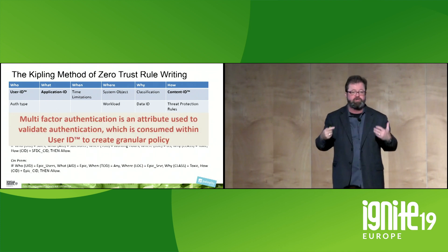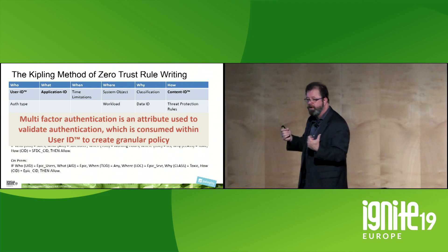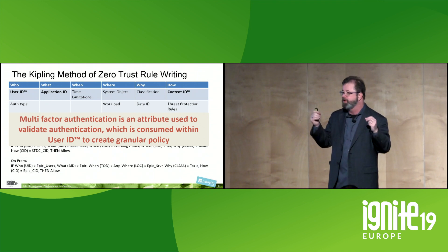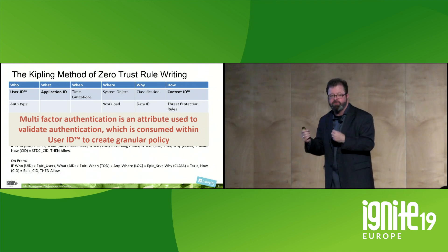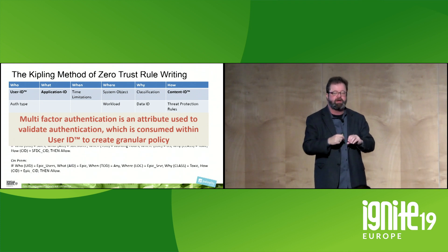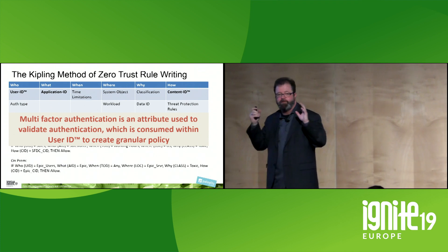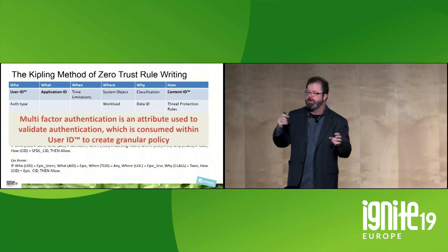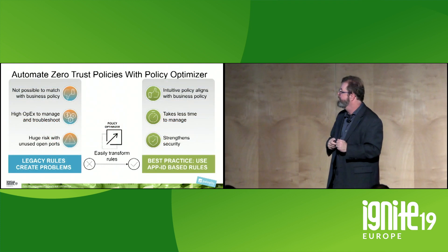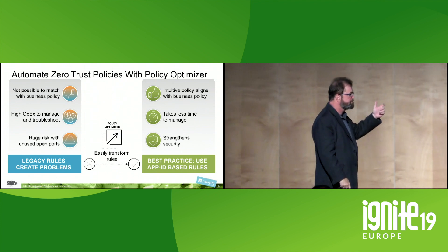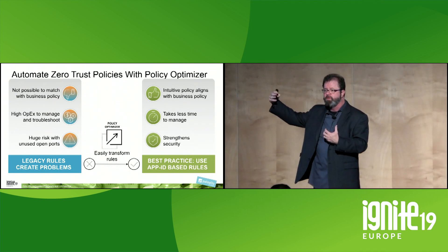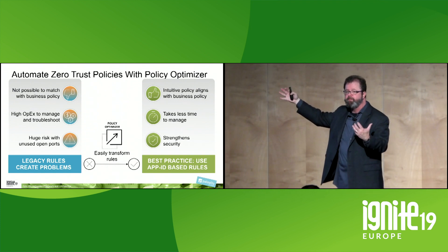We can use multi-factor authentication to consume identity information inside User ID. To reiterate: multi-factor authentication is not equal to Zero Trust — that is a lie from somebody who doesn't understand Zero Trust. We consume it as an attribute within User ID. User ID, App ID, and Content ID are still the three most transformative core technologies in the history of cybersecurity. And we can automate this using Policy Optimizer, where we look at the traffic and automatically turn those layer three rules into App ID-based rules. This is part of building the machine to defeat the machine.